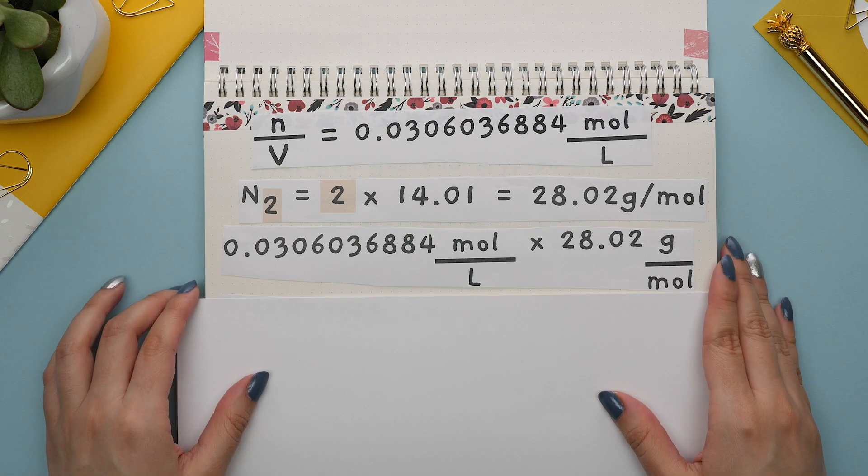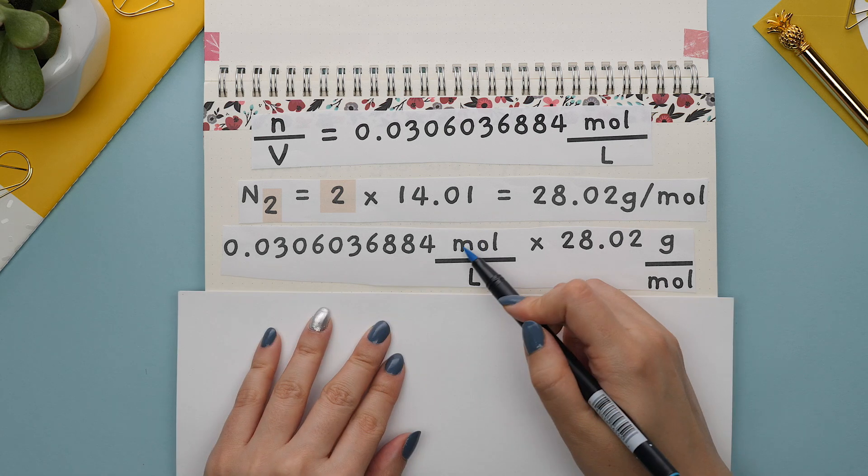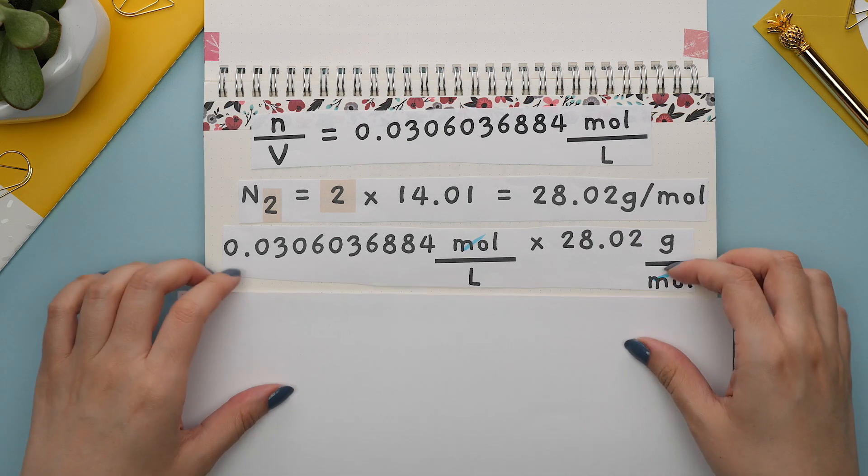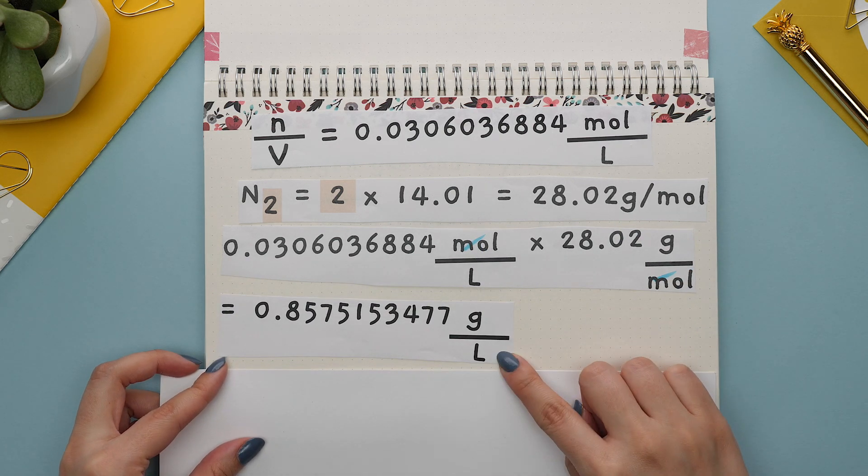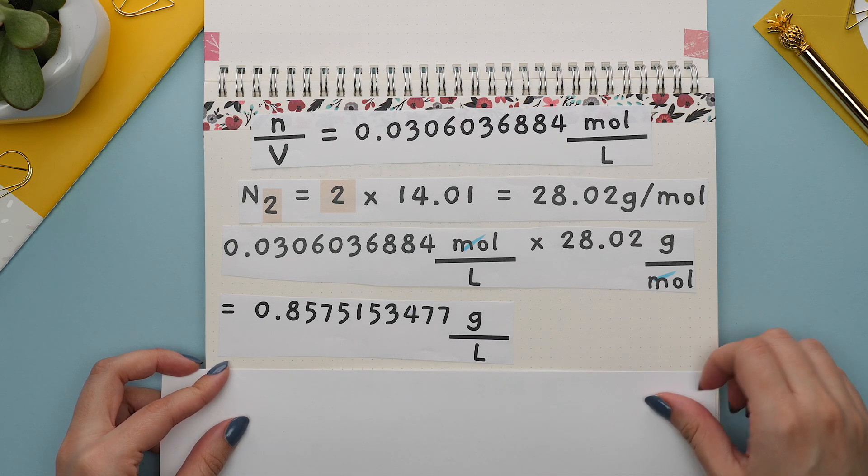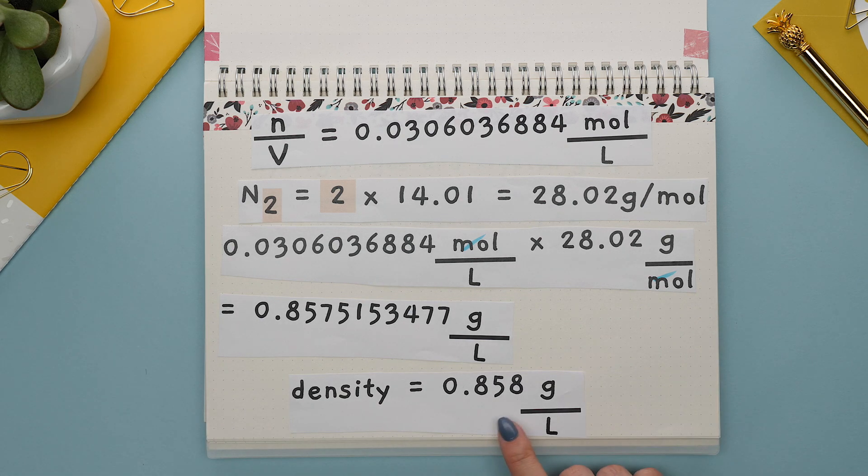Multiply what we previously found by this molar mass to cancel out the moles and we now have the correct units for density. Last step is to round up to three sig figs since the lowest amount of sig figs is three.